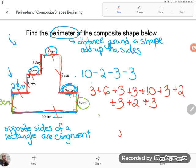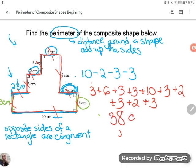So here we go. 3 plus 6, plus 3, plus 3, plus 10, plus 3, plus 2, plus 3, plus 2, plus 3. And I get a total of 38 centimeters around the outside of that shape.